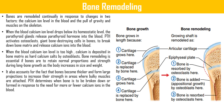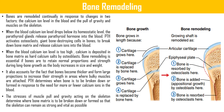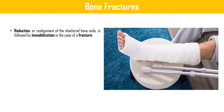Bone remodeling is essential for bones to retain normal proportion and strength during long bone growth. It also accounts for bones becoming thicker and forming larger projections to increase strength where bulky muscles are attached. Parathyroid hormone determines where bone is to be broken down or formed in response to calcium ion needs, while the stresses of muscle pull and gravity determine where bone matrix is broken down or formed so the skeleton remains as strong as possible.